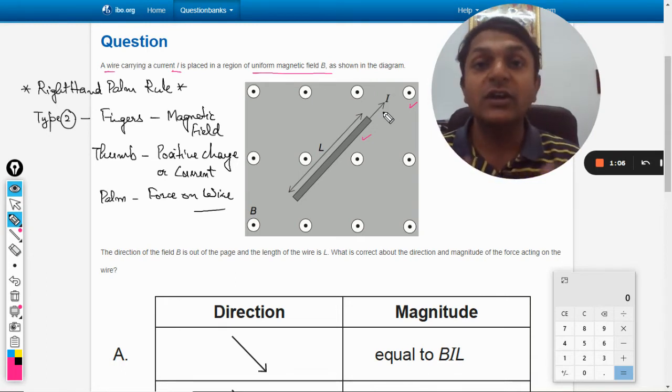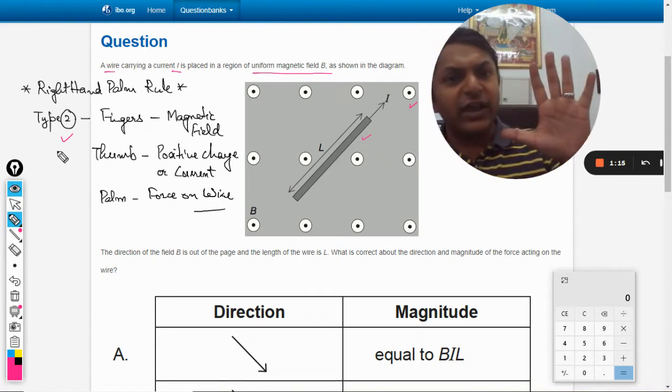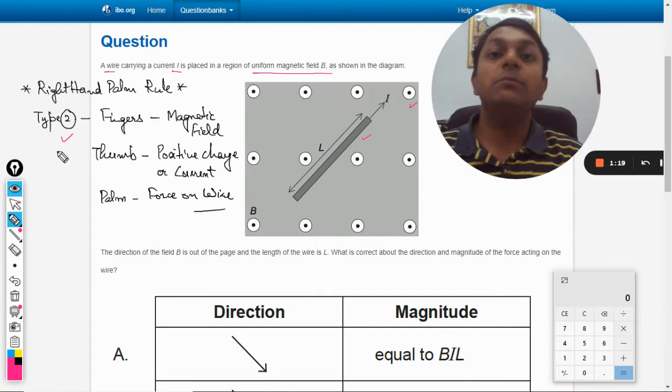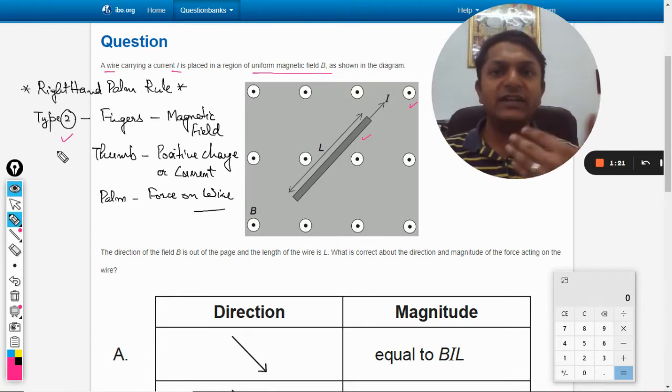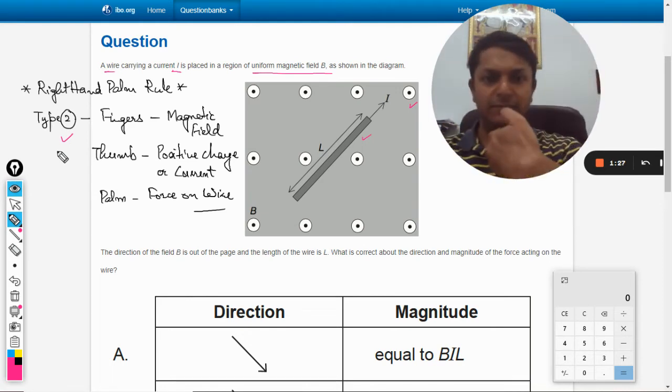In this question we would be using the right hand palm rule type 2. According to it, this is our right hand and our fingers will be pointing towards the magnetic field. So magnetic field is coming towards me from the laptop screen, so I am keeping my fingers towards me.